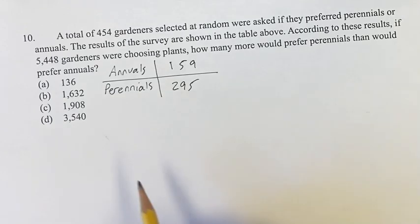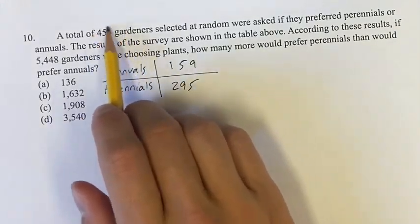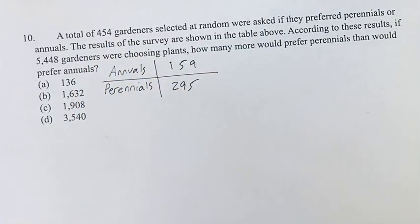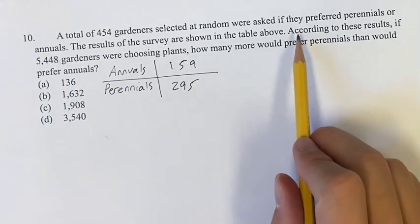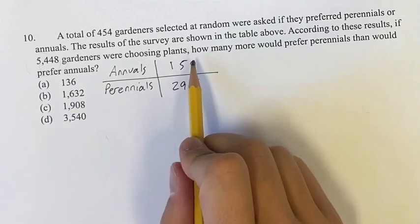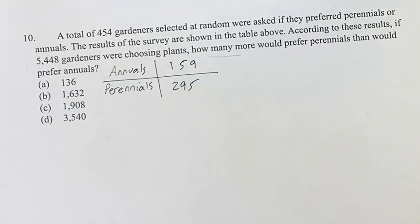So what we have to do is we have to find the percentage or the proportion of these gardeners that wanted to do annuals. We can multiply that percentage by this assuming that they're the same because we're saying according to these results. We multiply that proportion by 5,448 and that will give us our value of out of those 5,000 how many would choose annuals, how many would choose perennials, and then if we're trying to find how many more we can find the difference between them.